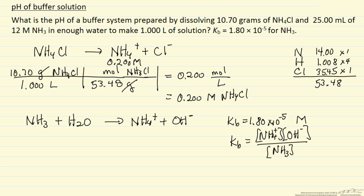And so what happens is we're adding 25 ml of 12 molar ammonia, and then we're diluting it essentially, so we need to calculate the final concentration of the ammonia.